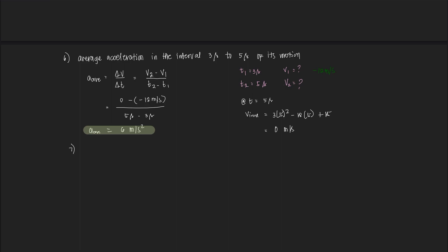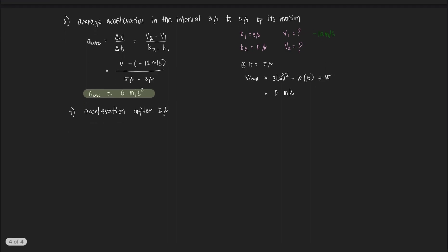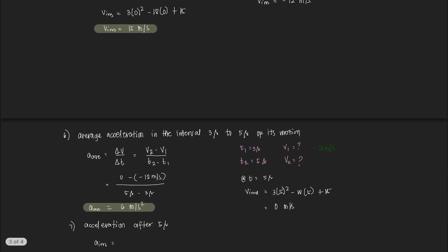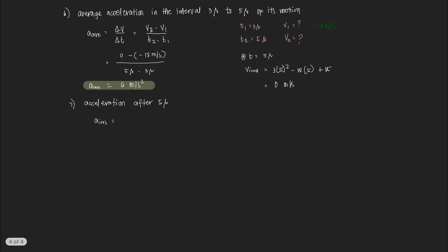Question number 7: find the acceleration of the object after 5 seconds. We are looking for instantaneous acceleration, which we solved as the second derivative equal to 6T minus 18. At T equals 5 seconds, acceleration is equal to 6 times 5 minus 18, so 30 minus 18 — the acceleration of the particle at 5 seconds is equal to 12 meters per second squared.